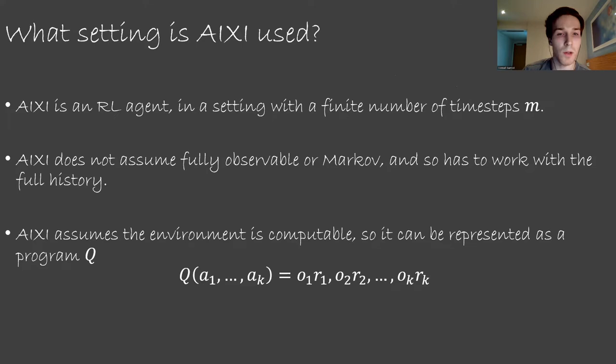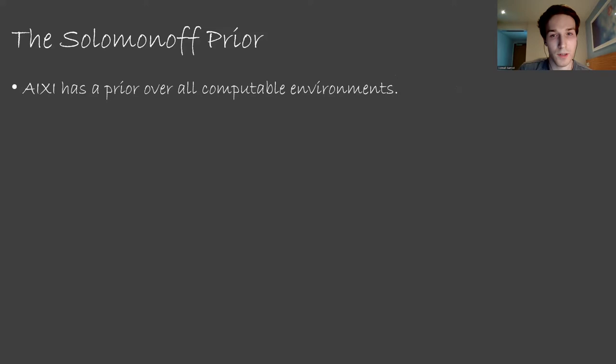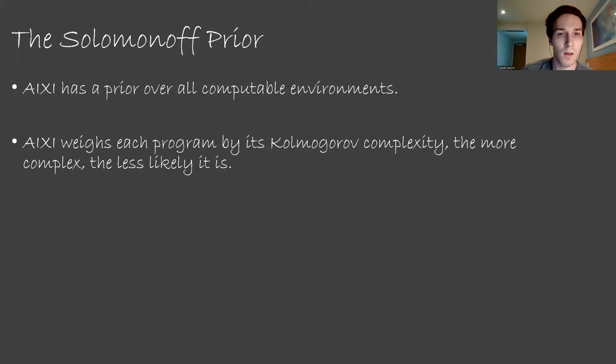ICSI does make one assumption about the environment, which is that it's computable. What this means is it can be represented by some program. There is some program Q, which given the set of actions the ICSI agent has taken, can tell you exactly what it would have observed in the evolution of the environment. So how does ICSI go about making decisions? ICSI is very similar to a Bayesian agent. It's going to need a prior over all computable environments, since that's the only assumption we have.